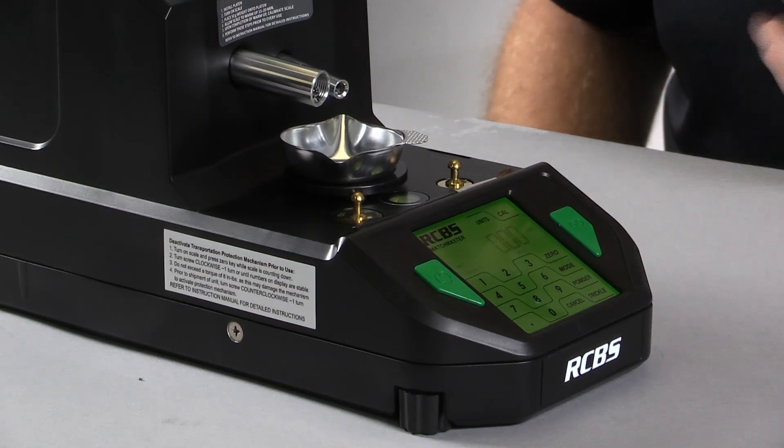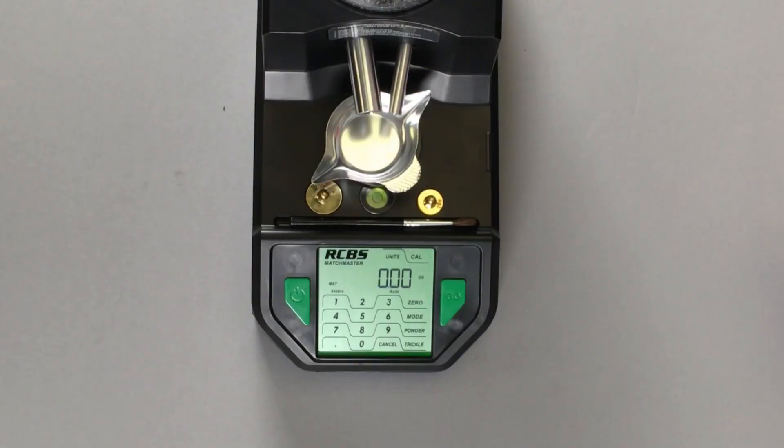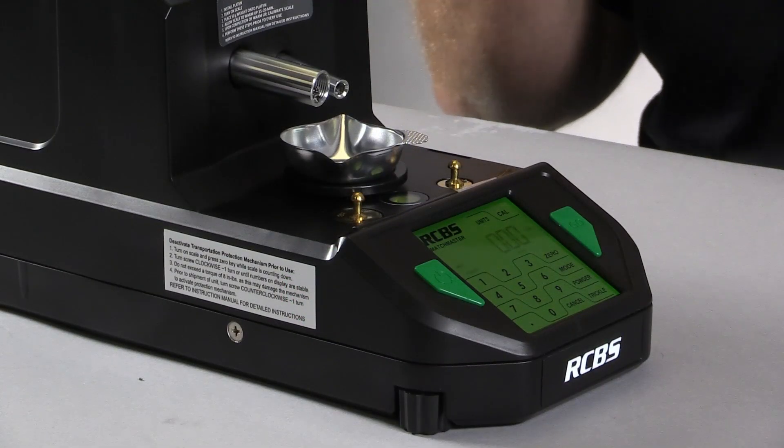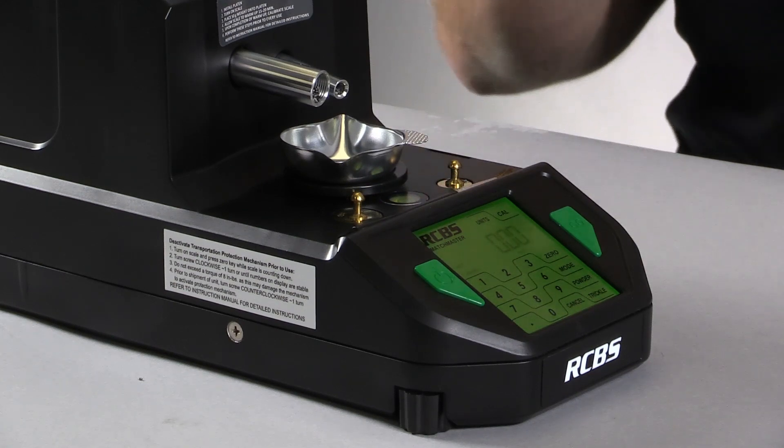Dispense speed one works well with your larger extruded powders, like your Hodgdan H4350 or your Rotombo, but it'll also work with certain ball powders like Hodgdan H335. If you find that one powder dispense speed provides inconsistent results, try a different dispense setting, knowing that setting speed number one will have slower dispense times, where setting four will have faster dispense times and may result in an overcharge condition if you're in a speed setting that is too fast for the unit.